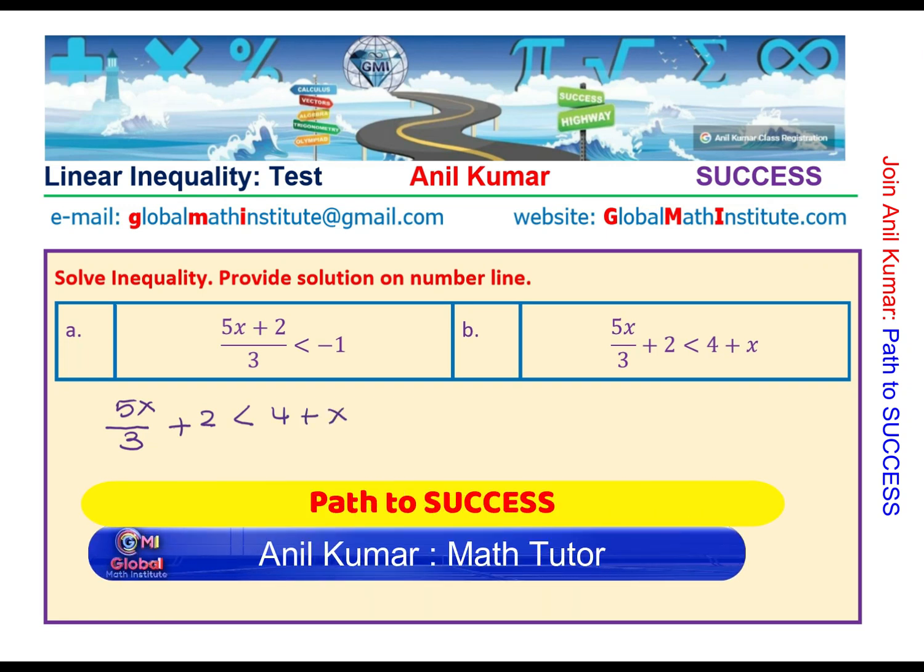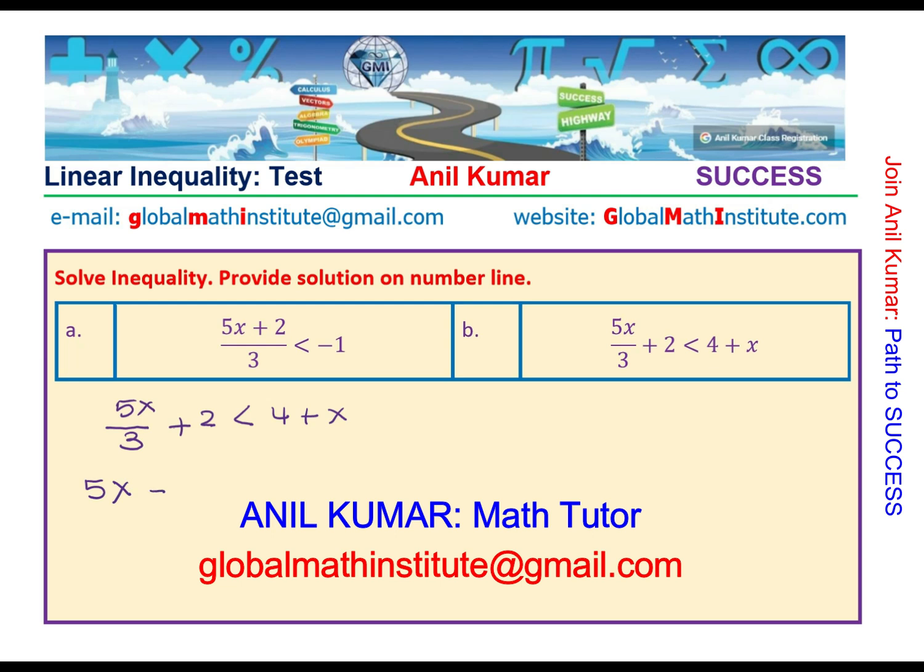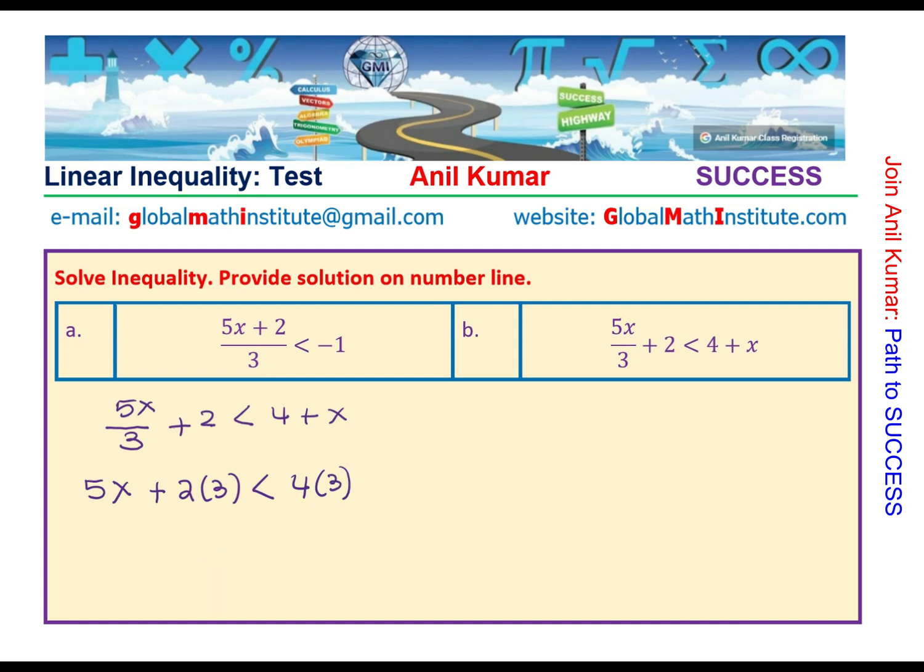Once again, 3 is the common denominator. Multiplying by 3, we will get 5x, 3 cancels here, plus 2 times 3, less than 4 times 3 plus x times 3. You see, we multiplied each and every term with 3.